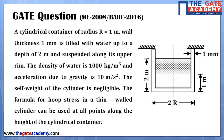A cylindrical container of radius r = 1 meter, wall thickness 1 millimeter, is filled with water up to a depth of 2 meters and suspended along its upper rim. The density of water is 1000 kg/m³ and acceleration due to gravity is 10 m/s². The self-weight of the cylinder is negligible. The formula for hoop stress in a thin cylinder can be used at all points along the height of the cylindrical container.